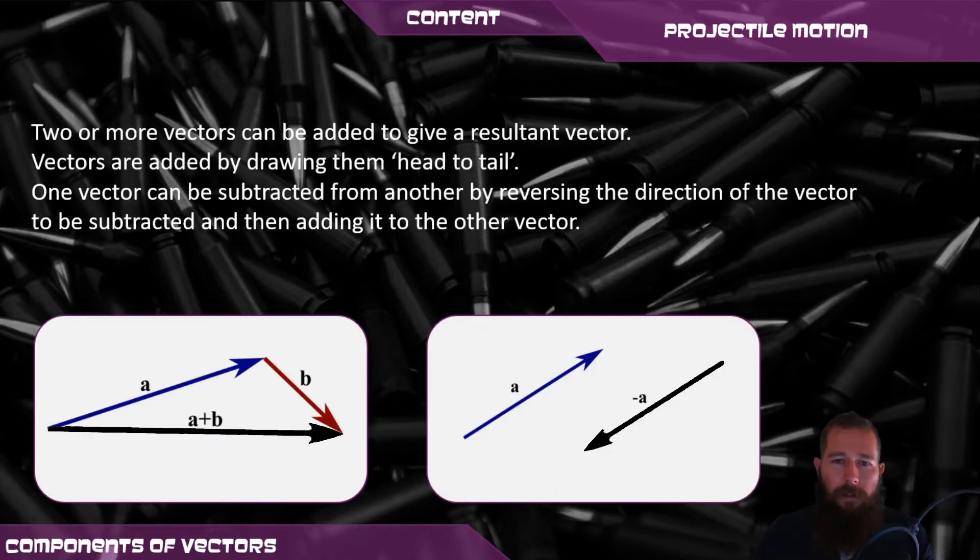Often we work with multiple vectors, and sometimes we need to add them up. But it's more than just adding up the magnitude of the vectors, because the direction is also important. So the way we can add vectors is when we draw them with an arrow, we add the arrows head to tail, as can be seen in the diagram below.